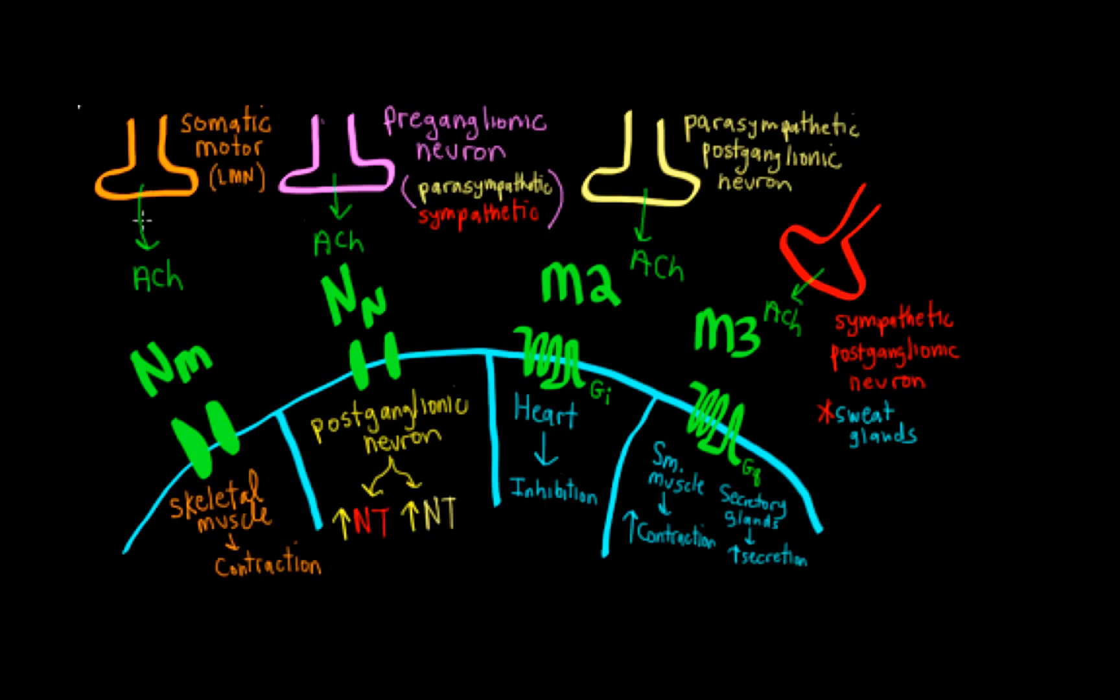They release acetylcholine in response to various stimuli. It could be from an upper motor neuron, it could be a reflex. Whatever the case may be, acetylcholine is released and it acts on an N sub M receptor, which is a ligand-gated ion channel that causes a depolarization of the skeletal muscle, a triggering of a muscle action potential. Ultimately that action potential, as it travels down the T tubules, causes release of calcium from the sarcoplasmic reticulum, and that calcium binds to troponin on the actin myofilaments, and that causes a power stroke and shortening of the muscle, which we call contraction.